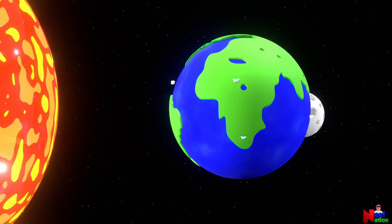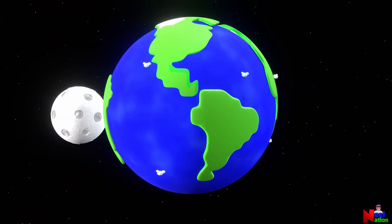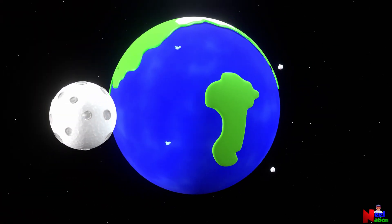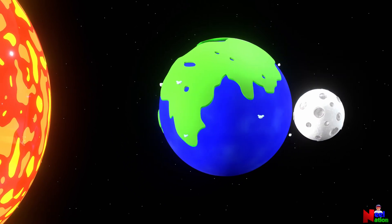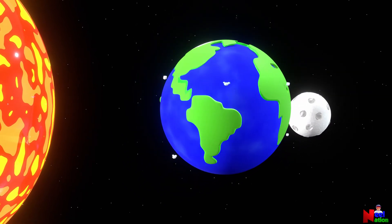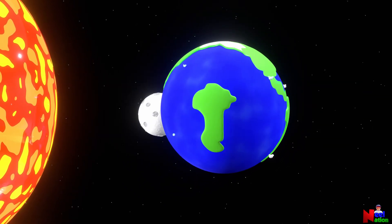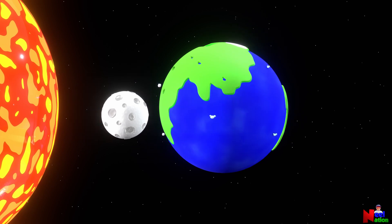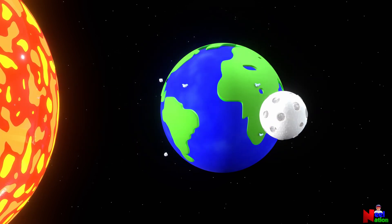Did you know that the moon has no light of its own? The sun is the only source of light in our solar system. Moonlight is actually sunlight bouncing off the moon's surface. Without the sun, our moon would be completely dark.